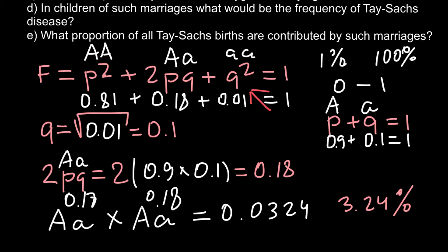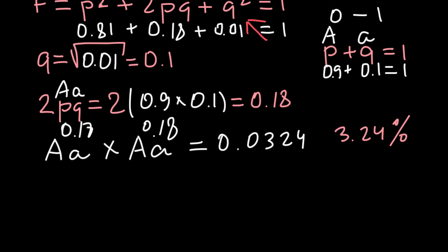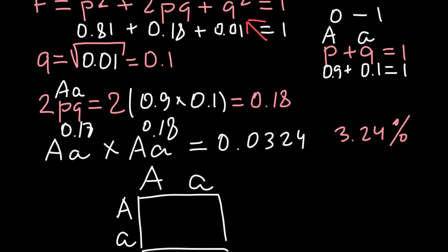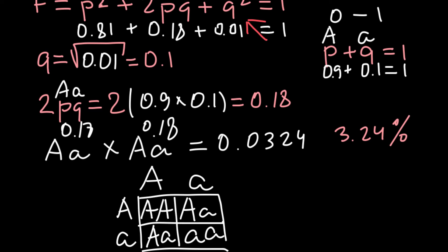Question D: In children of such marriages, what would be the frequency of Tay-Sachs disease? If two heterozygous people marry, the possible offspring genotypes are: AA, Aa, Aa, and aa. As you can see, when two heterozygous people marry, the probability that they would have an affected child equals one quarter.